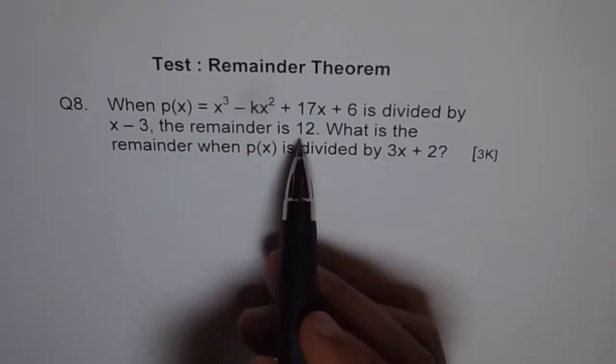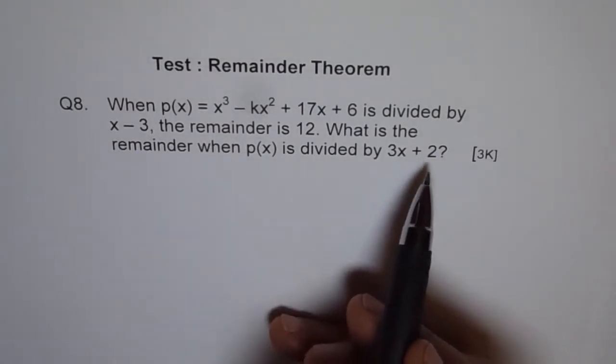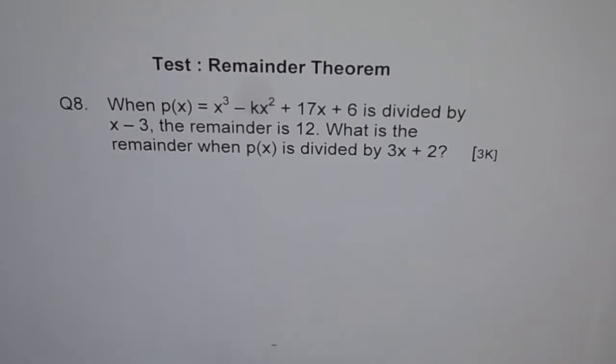Okay, so from the first statement we can find the value of k and then plug in minus 2 over 3 to get the remainder for the next one. So let's do it.